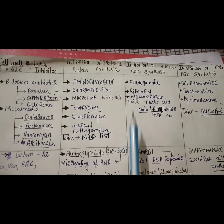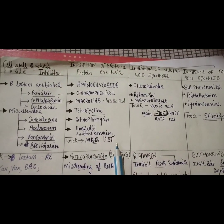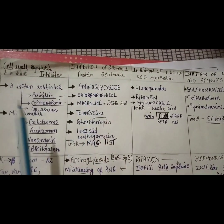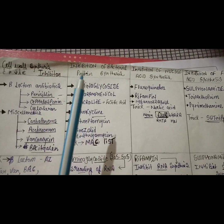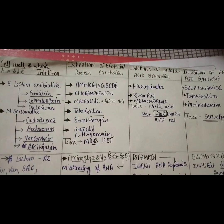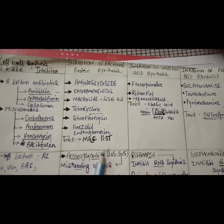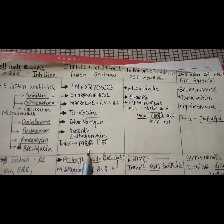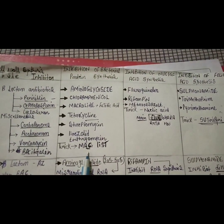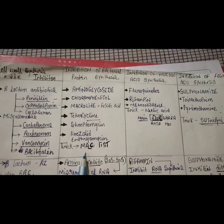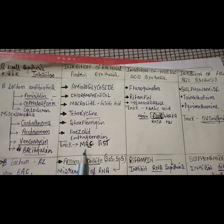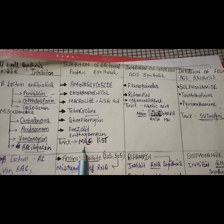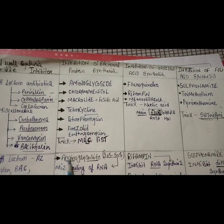I can remember protein synthesis inhibitors from the MAC LIST. MAC is a beauty cosmetics brand which is very costly and rich, so I remember it as something very rich and high in price — similarly, this list is very rich in information. MAC LIST helps us remember the key drug classes.